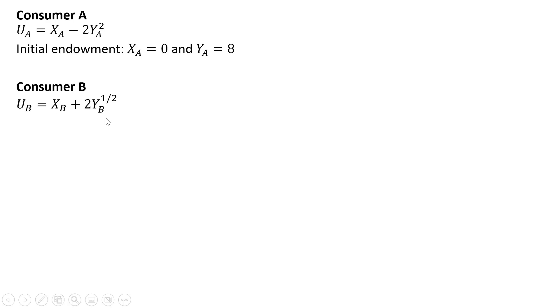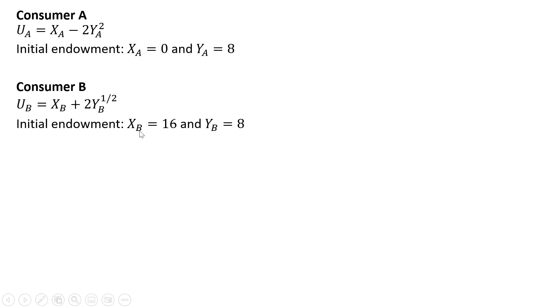Consumer B's utility function is a more traditional utility function — this would be a quasi-linear utility function. And the initial endowment here is 16 units of good X and 8 units of good Y.